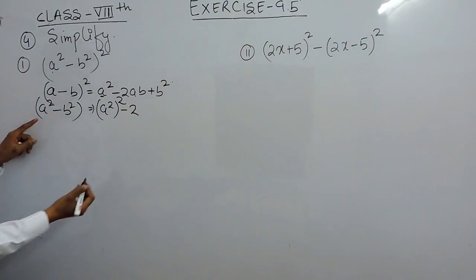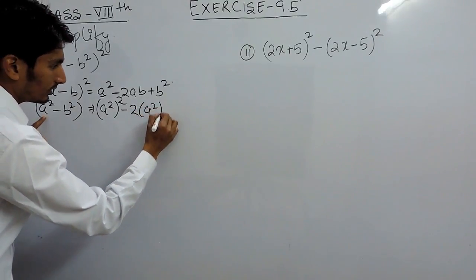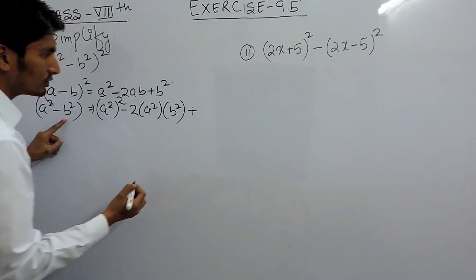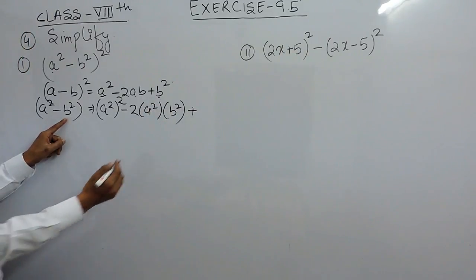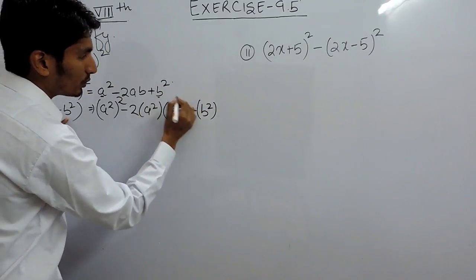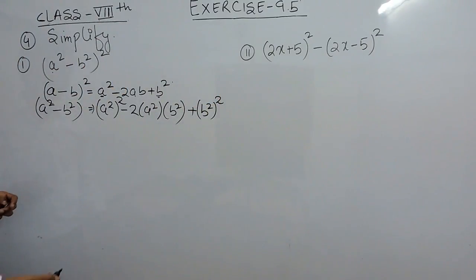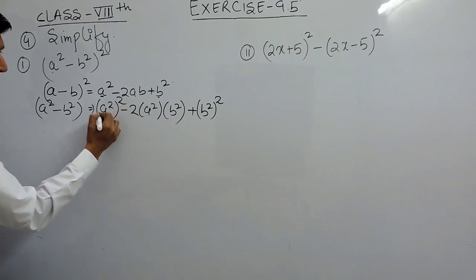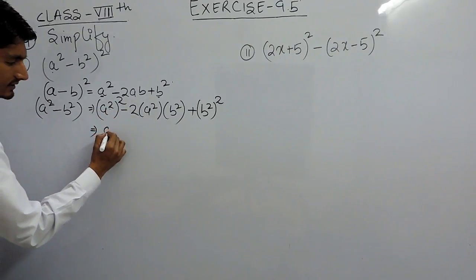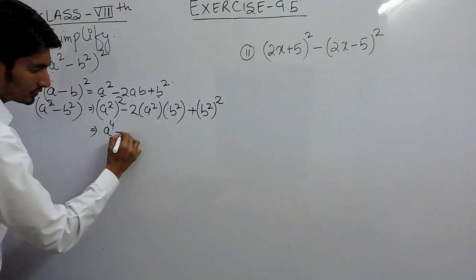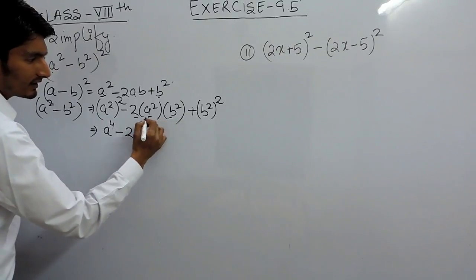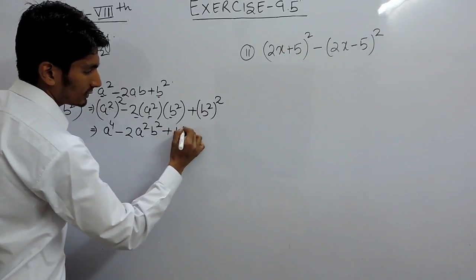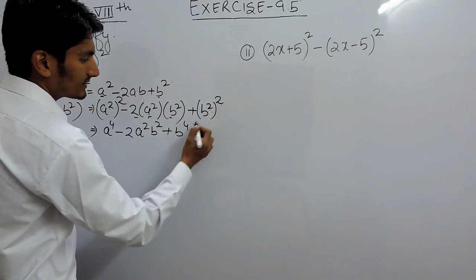Minus 2, and again in place of 'a' I have to write a square, and in place of 'b' I have to write b square. Because this is b square, this will again be b square. Now, because the powers are — this is a square raised to power 2 — the power gets multiplied, giving a to the power 4. Similarly this will become b raised to power 4.